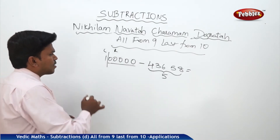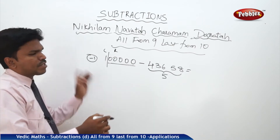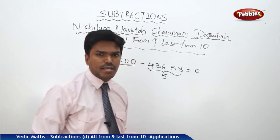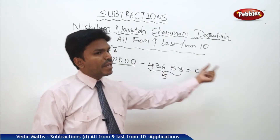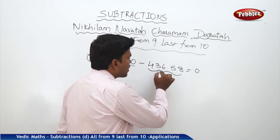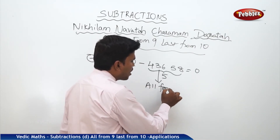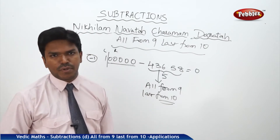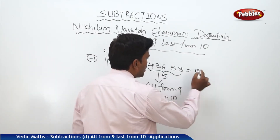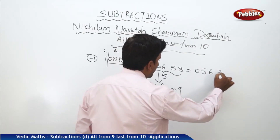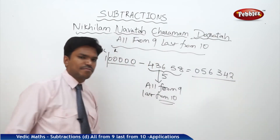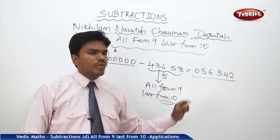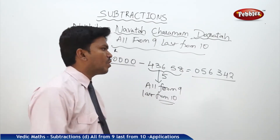To get the answer, subtract 1 from the given left part. What is the left part here? It is 1. If 1 is subtracted from 1, how much will you get? Zero. Now to get the remaining part of the answer, simply apply 'all from 9, last from 10' to the subtrahend number. So for 43658 — applying all from 9, last from 10 — you get 5, 6, 3, 4, 2. So the answer is 056342.